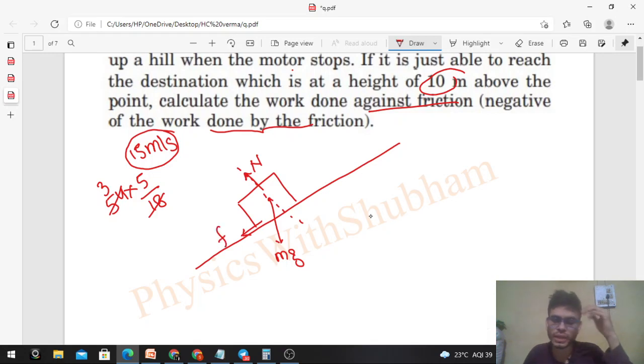So if we use work-energy theorem, then work done by all the forces is equal to change in kinetic energy, K final minus K initial. Now, work done by normal reaction plus work done by friction force plus work done by mg - that is equal to change in kinetic energy, K final minus K initial.